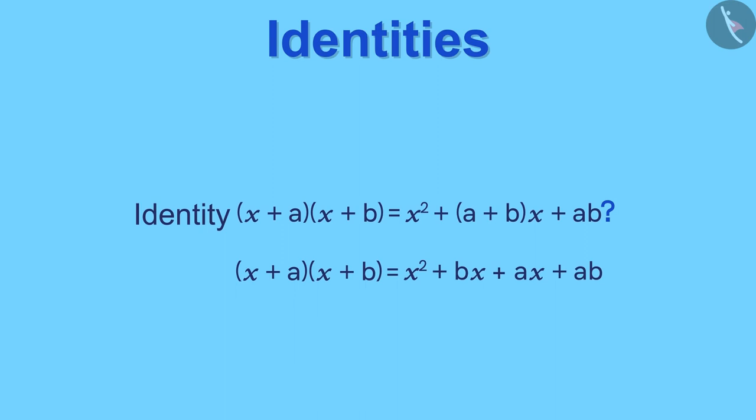But this doesn't look like the right hand side of our identity. So how do we get that? When we look at these two middle terms, we can see that they both have variable x in common.